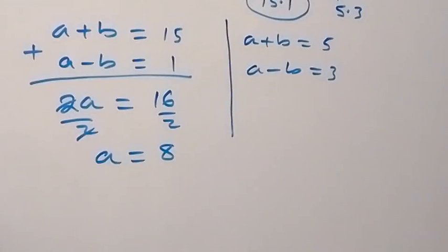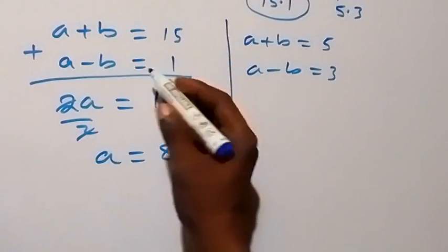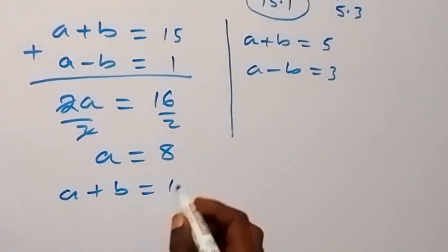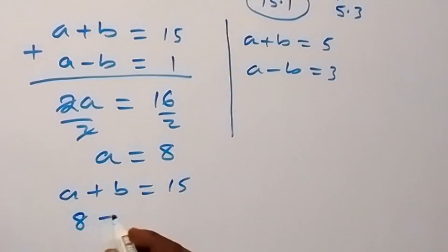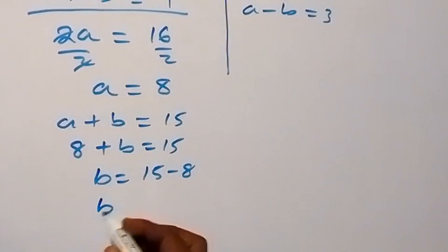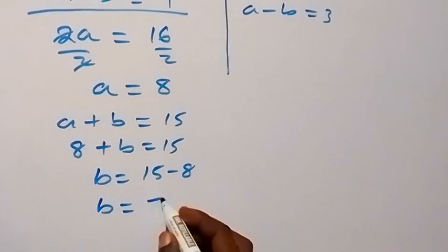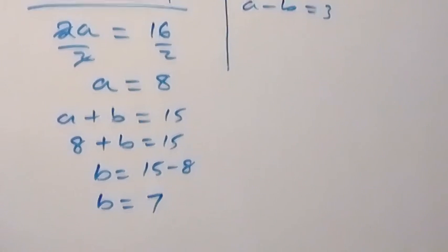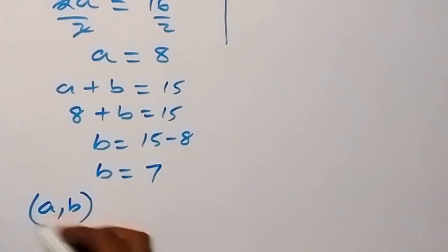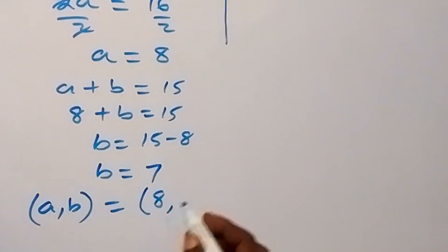We can use any of these two equations to get b. From the first equation, a plus b equals 15. Since a equals 8, we have 8 plus b equals 15. Therefore, b equals 15 minus 8, which is 7. From the first case, a, b equals (8, 7).